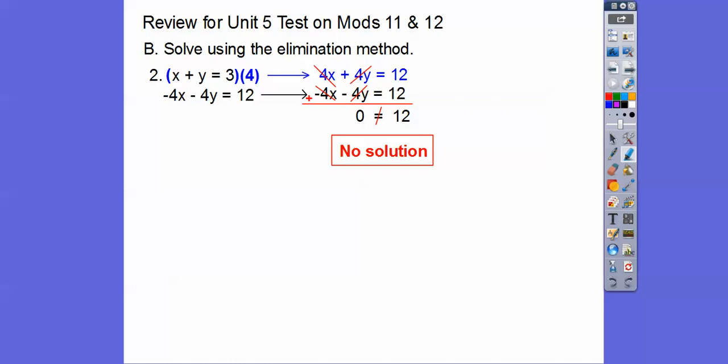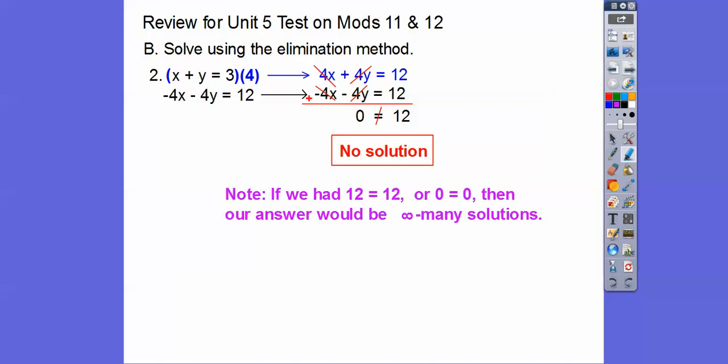If instead we had gotten something like 12 equals 12, or 0 equals 0, or 18 equals 18, that means one line is right on top of another — they're the same line — so there are infinitely many solutions. That sideways 8 is our math symbol for infinity.